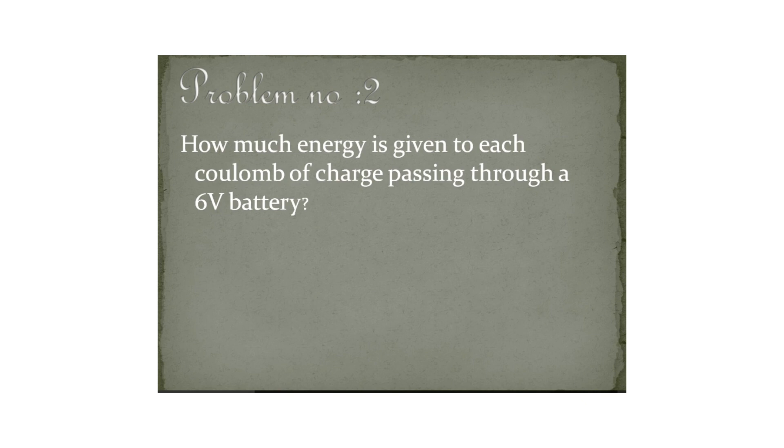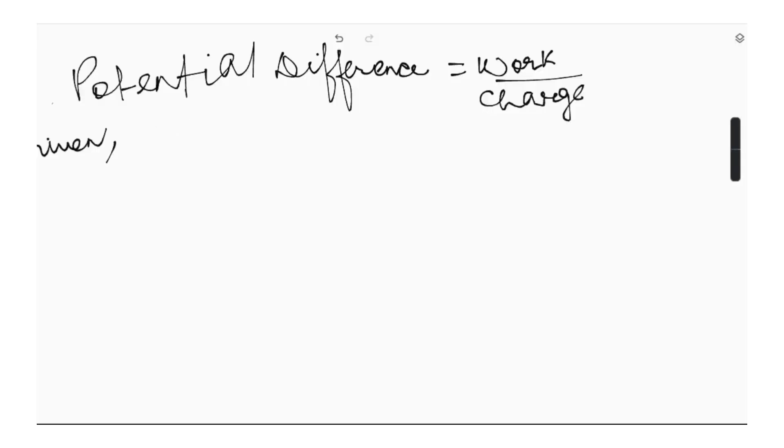How much energy is given to each coulomb of charge passing through a 6-volt battery? First we will see what is given in this problem. We are given each coulomb of charge, means charge Q is 1 coulomb, and also we are given potential difference V of 6 volts. We have to find energy. Energy is actually equivalent to work done. So we have to find energy or work done.